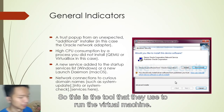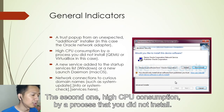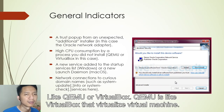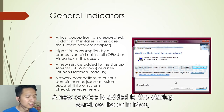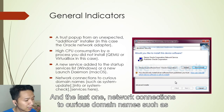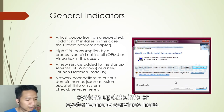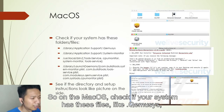The second indicator is high CPU consumption by a process you did not install — like QEMU or VirtualBox, which are virtualization tools used to run the virtual machine. Third, new services are added to the startup service list, or on Mac, a new LaunchDaemon. The last general indicator is network connections to suspicious domain names such as system-update.info or system-check.services.